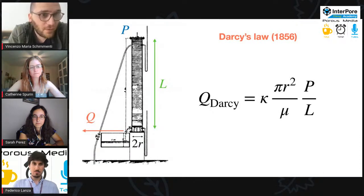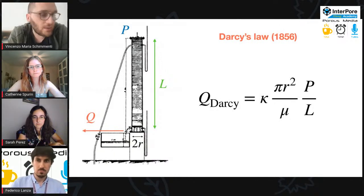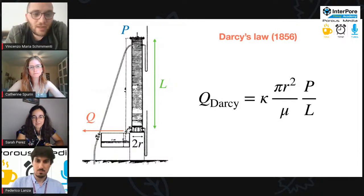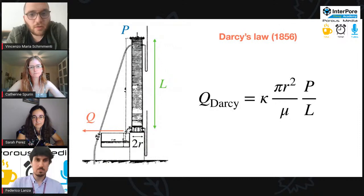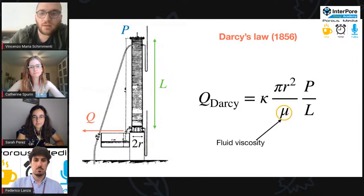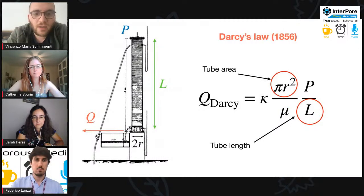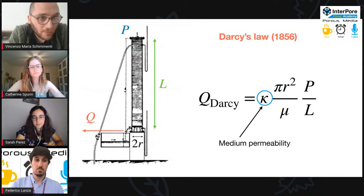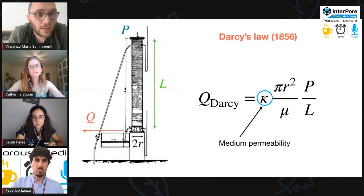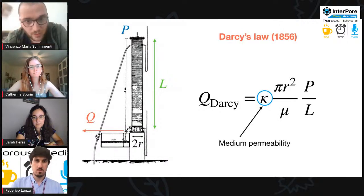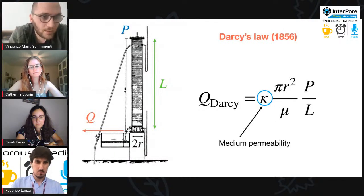Let's start from Darcy Law. The Darcy Law was formulated in 1856 by Darcy in France, in the city of Dijon. Basically, it relates the flow of a fluid in a tube of length L with some radius R, with a given viscosity and at a given pressure. There is an important parameter, the medium permeability, which is a proportionality factor and includes all the properties of the material inside the tube — because we are talking about the flow inside a porous medium, not free flow.